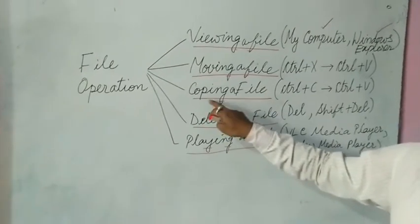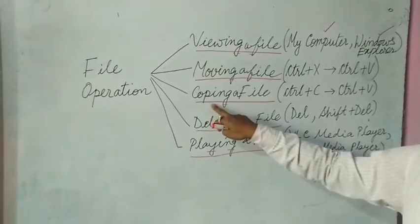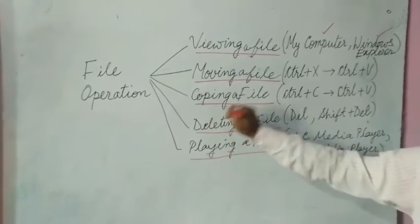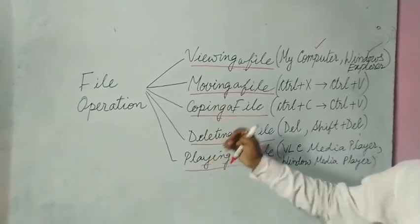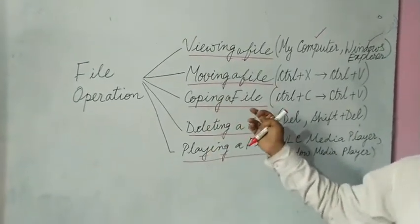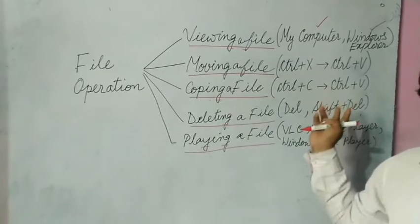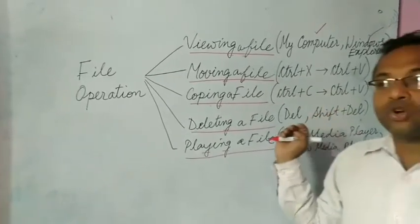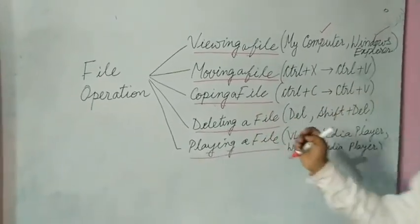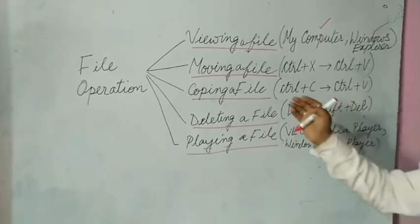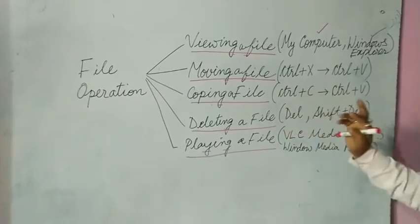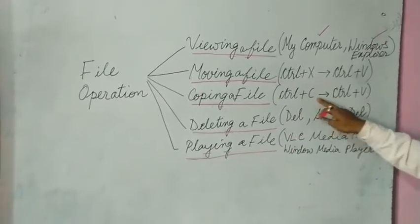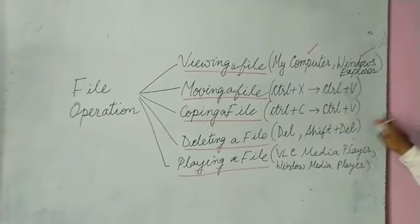Copying a file means to make a duplicate copy of a file. Duplicate means a file will be present in C drive as well as in your D drive — both copies are there, and you can make multiple copies. The shortcut keys are Ctrl+C and Ctrl+V.